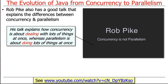Rob Pike, formerly of Bell Labs and now at Google, has a good talk explaining why concurrency is not parallelism. In a nutshell, concurrency is about dealing with a lot of things at once — coordinating, synchronizing, and managing interaction — whereas parallelism is about doing lots of things at once. It's a succinct and useful distinction.